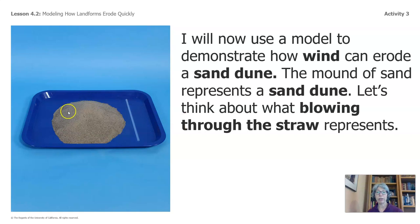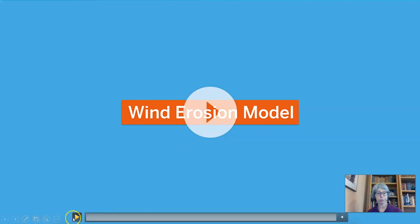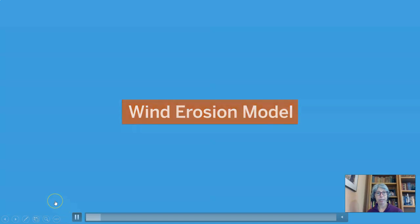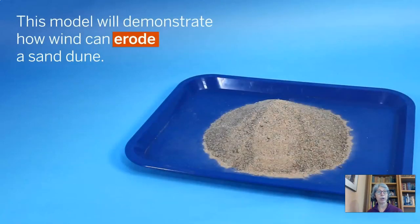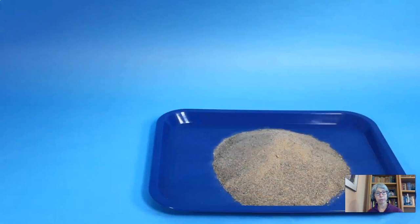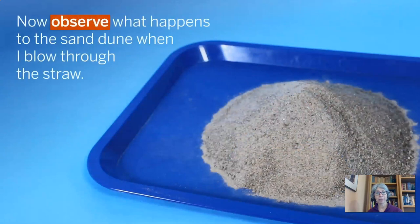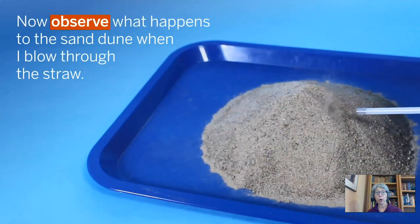I will now use a model to demonstrate how wind can erode a sand dune. The mound of sand represents a sand dune. Let's think about what blowing through a straw represents. Here's that video inside a video — Wind Erosion Model. This model will demonstrate how wind can erode a sand dune. This mound of sand represents a sand dune — it's our model. I will blow through the straw to model wind. Now observe what happens to the sand dune when I blow through the straw.